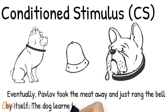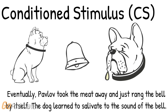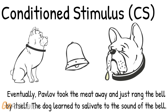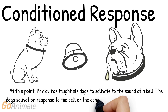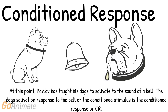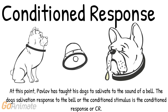Eventually, Pavlov took the meat away and just rang the bell by itself, and the dog would salivate to only the sound of the bell. At this point, the bell is no longer the neutral stimulus because it produces a reaction — it is now the conditioned stimulus, or CS. Pavlov had taught his dogs to salivate to the sound of a bell. The dog's salivation response to the bell, the conditioned stimulus, is the conditioned response, or CR. Any response to a conditioned stimulus is a conditioned response.